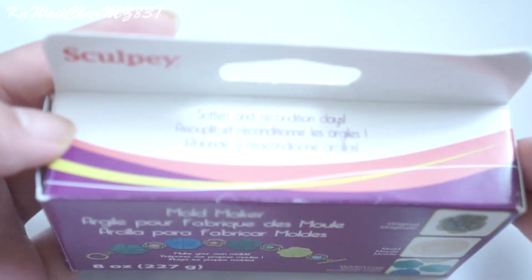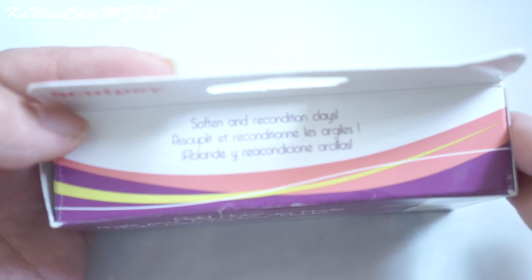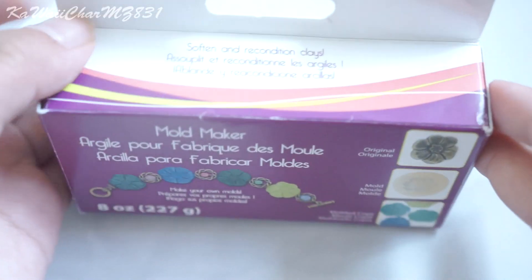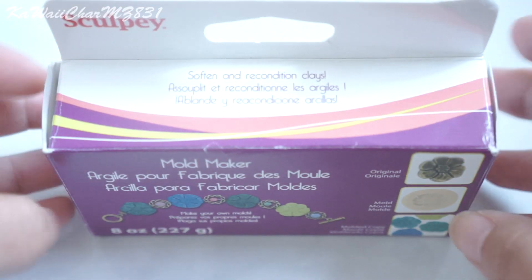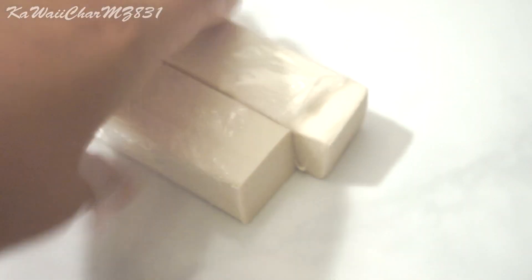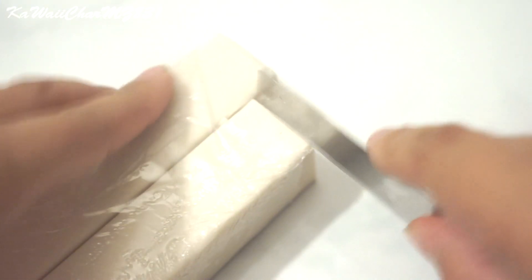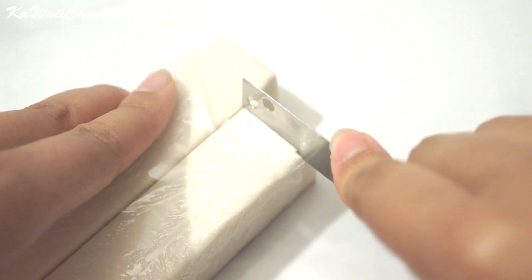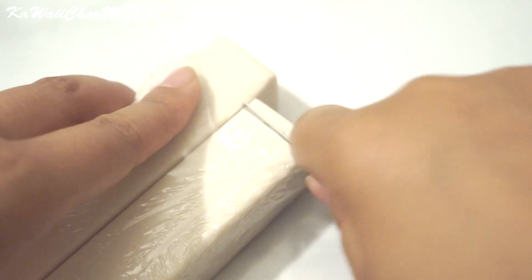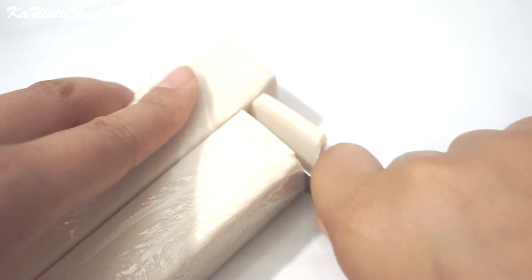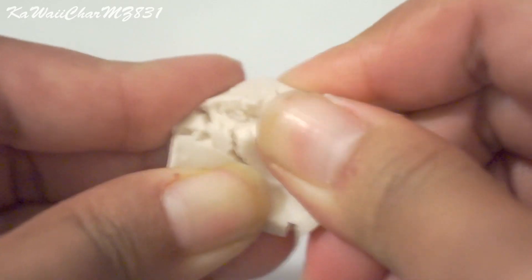You're gonna take your mold maker. Like I said, I didn't have Amazing Mold Putty, but I'm using Sculpey Mold Maker, and Sculpey Mold Maker is awesome. It has multiple uses. So you're gonna go ahead and open up the package, take out a chunk of the mold maker, just go ahead and cut a little piece of that. You don't really need too much.